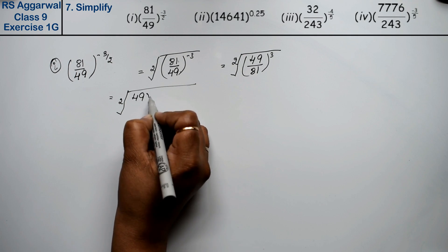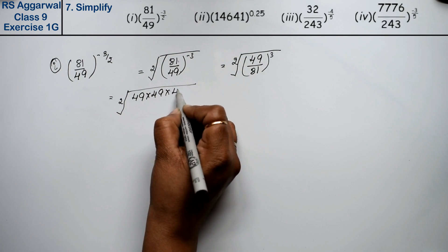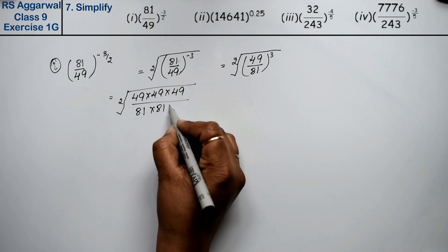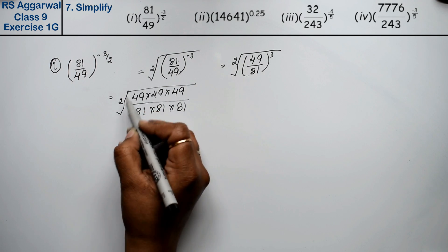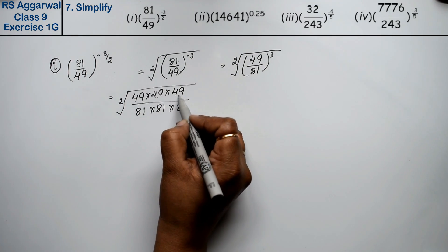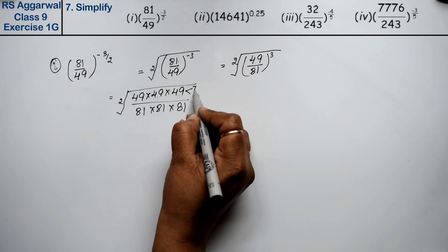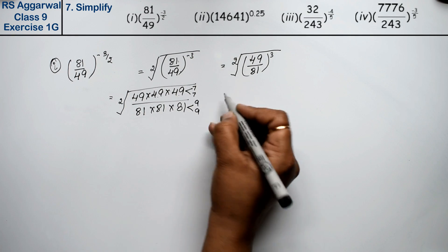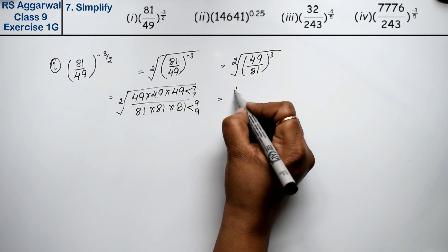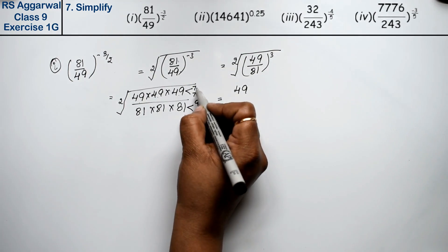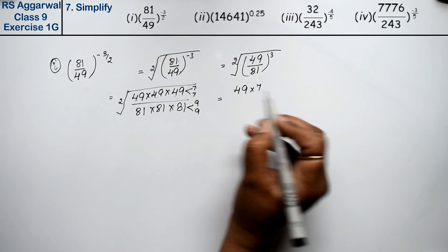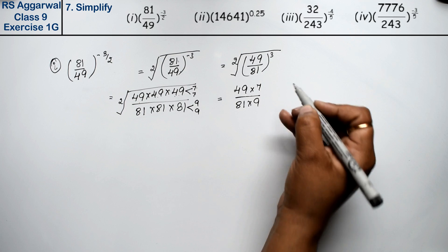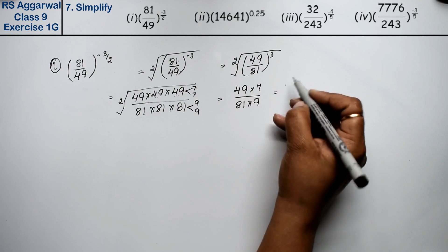We expand: 49 × 49 × 49 upon 81 × 81 × 81. Now 2-2 pairs can come out. We can further split: seven sevens are 49, so we split 49 further. Nine nines are 81, so 49 comes back out as 7, and 81 comes back out as 9.